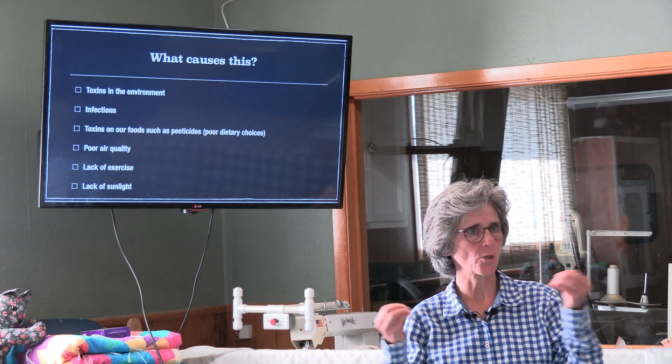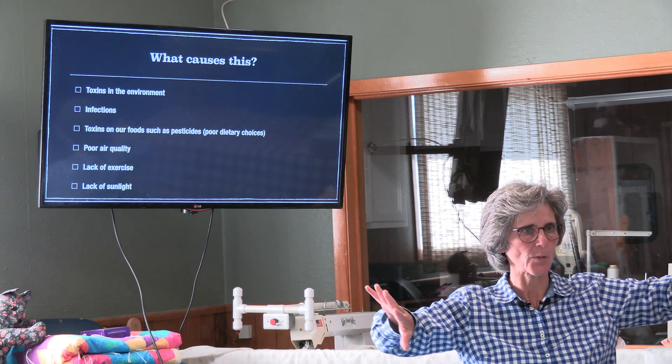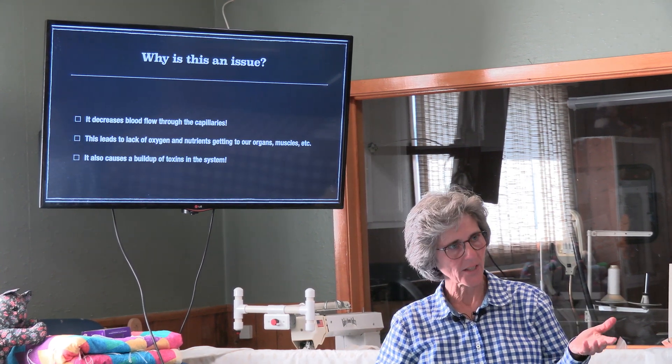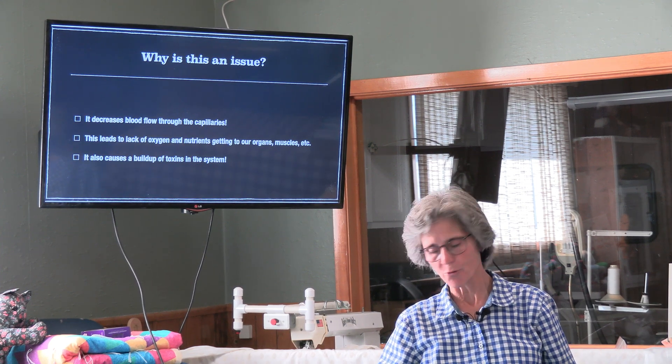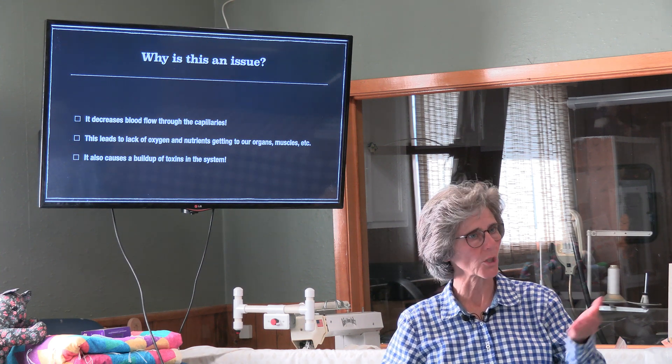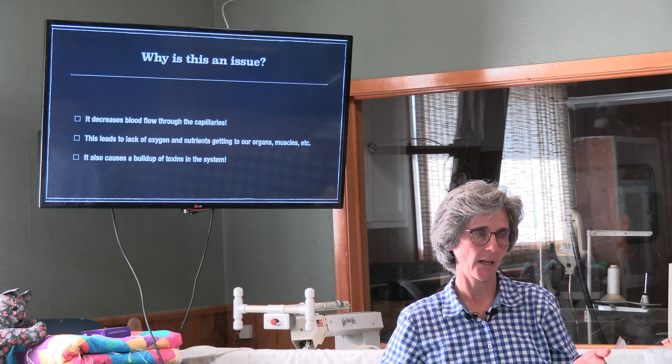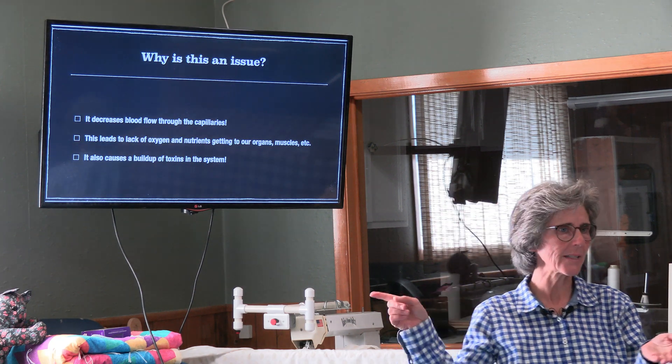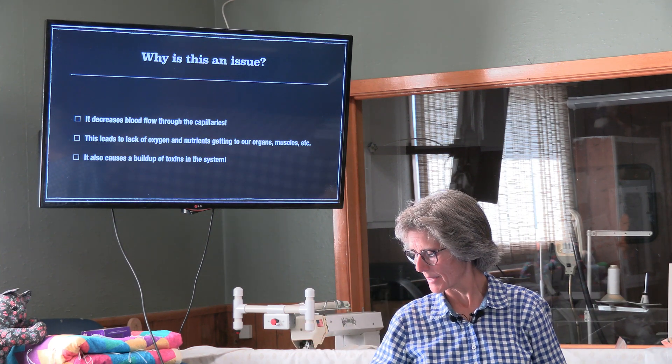It is lack of exercise and lack of sunlight. Sunlight actually helps to increase the electrical charge on these red blood cells so that they repel one another instead of being sticky, stuck together. Why is this an issue? We've been talking about it throughout this little presentation. It decreases the blood flow through the capillaries. It leads to lack of oxygen and you can't get nutrition to your cells. So your cells become sick and toxic. You can't get oxygen and nutrients to the cells. Neither can the cells get rid of their toxins. So it leads to a toxic buildup in the system.